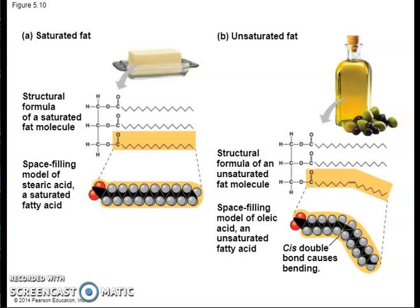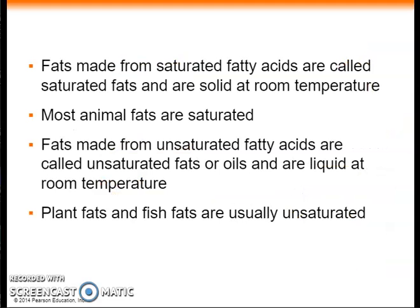Here is a side-by-side comparison of the saturated and unsaturated fatty acids. A saturated fatty acid is a straight chain, but an unsaturated fatty acid has a kink wherever there is a cis-double bond. The kinks caused by the cis-double bonds prevent the molecules from packing tightly enough to solidify at room temperature. Fats made from saturated fatty acids are saturated fats. Most animal fats are saturated and are mainly solid at room temperature. Examples include lard and butter.